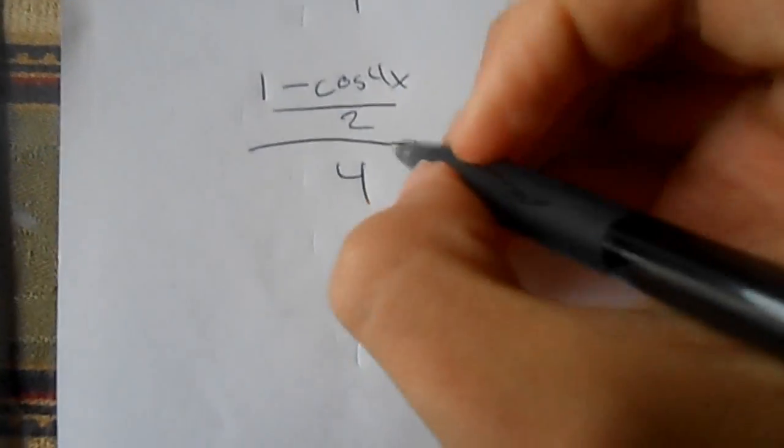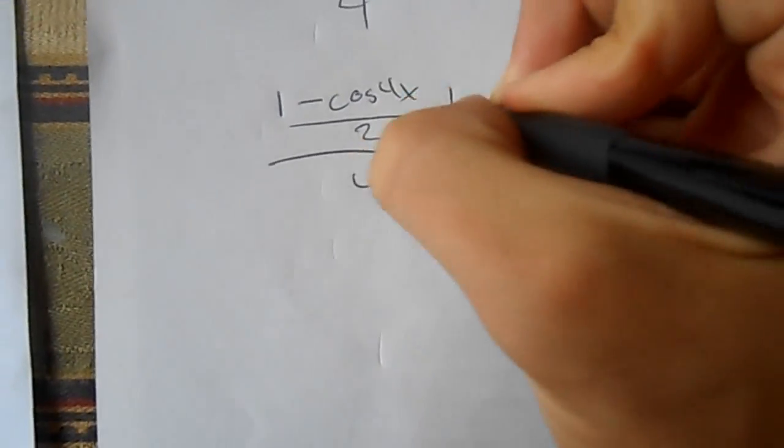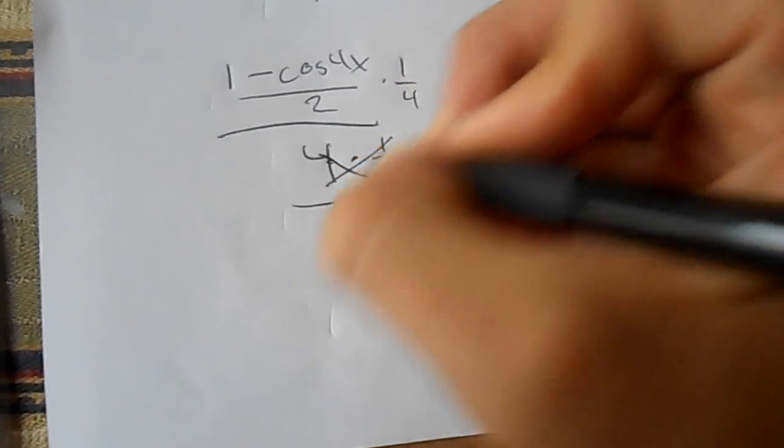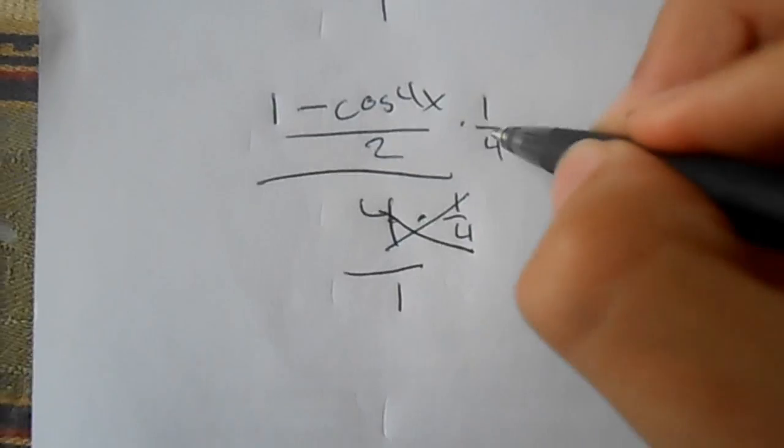And after that, you have to multiply by the reciprocal. So you can cancel stuff out. Because this is 4 times 1, you just cancel stuff out and then multiply the rest.